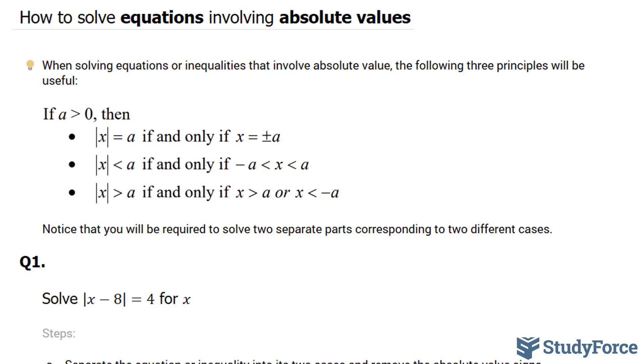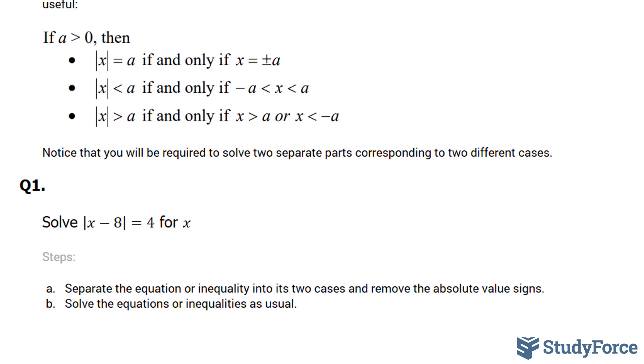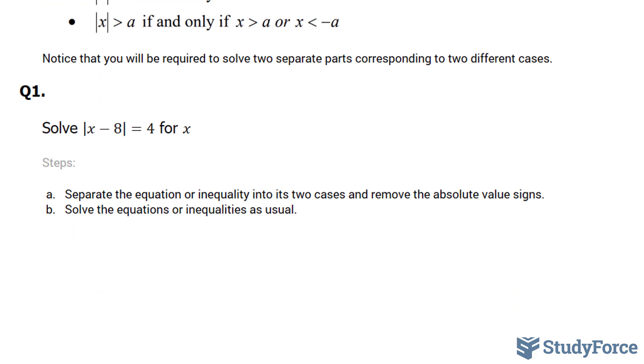That being said, let's start with question one. Question one asks, solve the absolute of x minus 8 is equal to 4 for x.